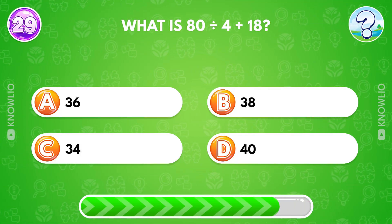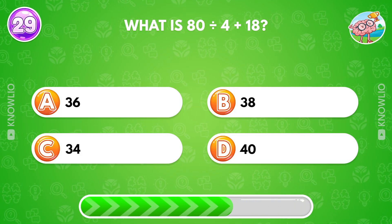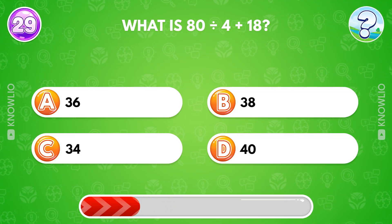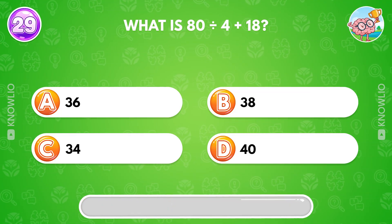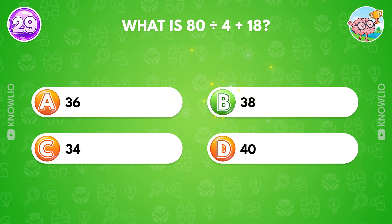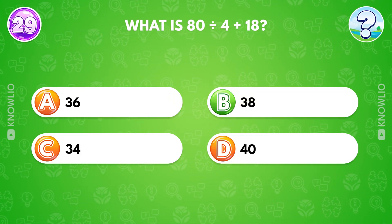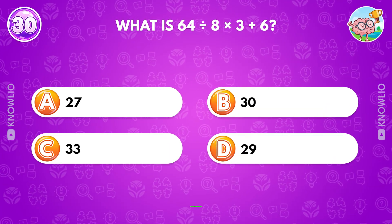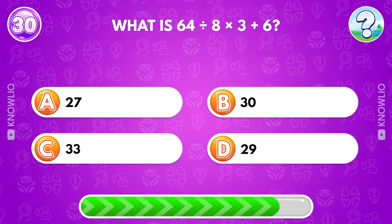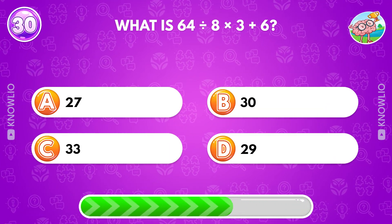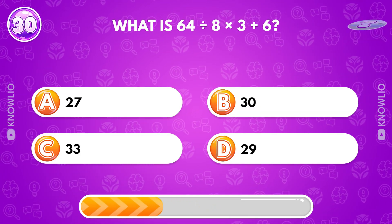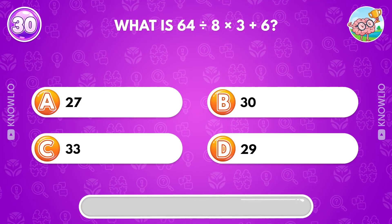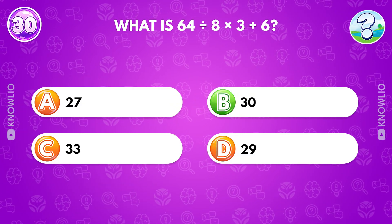What is 80 divided by 4 plus 18? Answer B, 38. What is 64 divided by 8 times 3 plus 6? Answer B, 30.